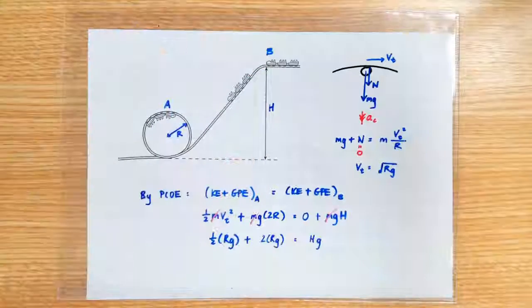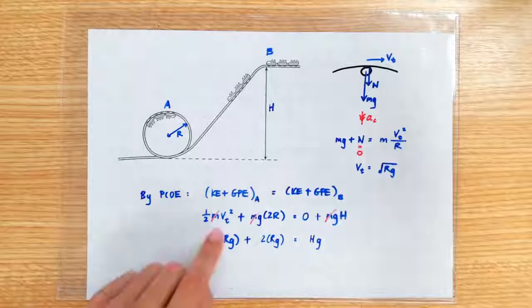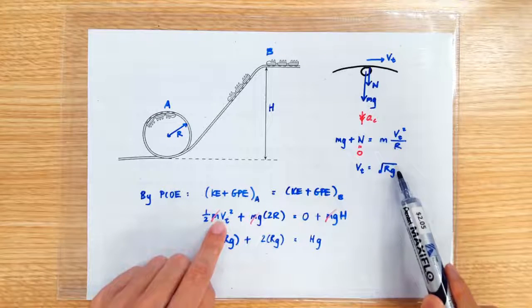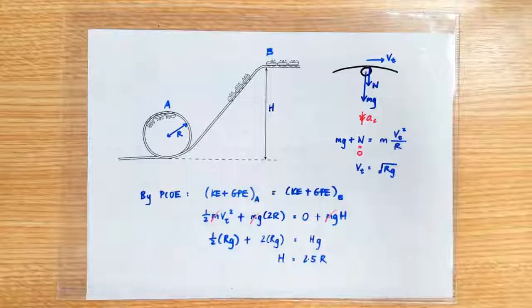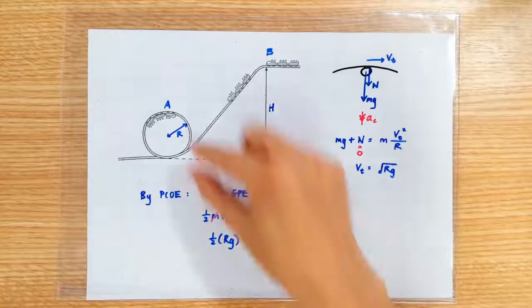We can get rid of all the m's and we are going to replace vt with square root of rg, so vt² is rg. So the minimum height turns out to be 2.5 times the radius of the circular motion.